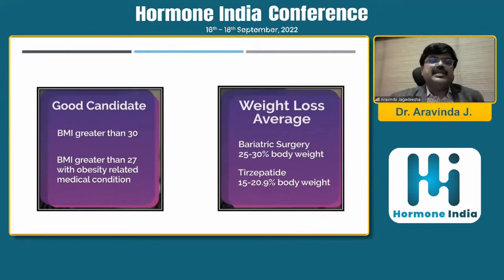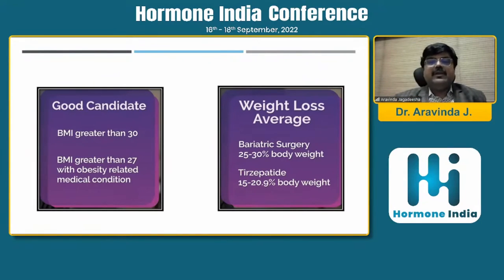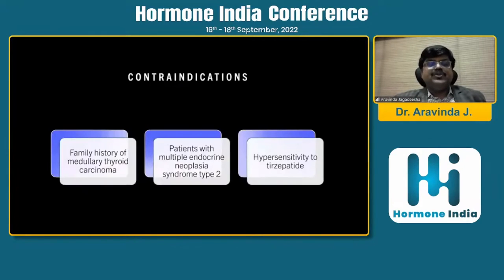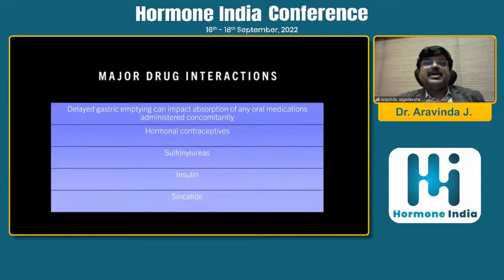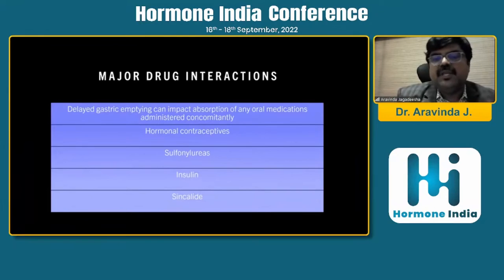The good candidate for tirzepatide is someone with BMI greater than 30, or BMI greater than 27 with obesity-related medical conditions. Comparing to bariatric surgery which gives 25–30% body weight reduction, tirzepatide provides 15–20.9% body weight reduction. The only limiting factor will be cost, which is the major stumbling block that could limit tirzepatide's uptake. Contraindications include a family history of medullary thyroid carcinoma, patients with multiple endocrine neoplasia syndrome type 2, and hypersensitivity. The major drug interaction to note is that delayed gastric emptying can impact absorption of any oral medication administered concomitantly, such as hormonal contraceptives, sulfonylureas, and insulin.